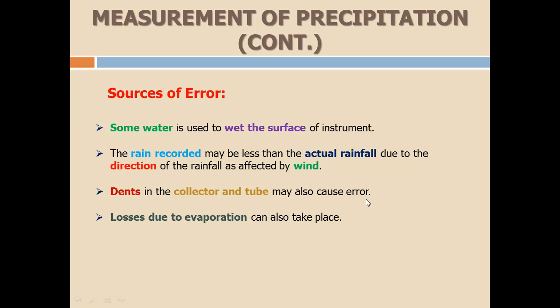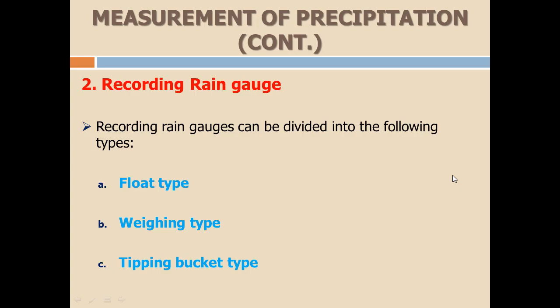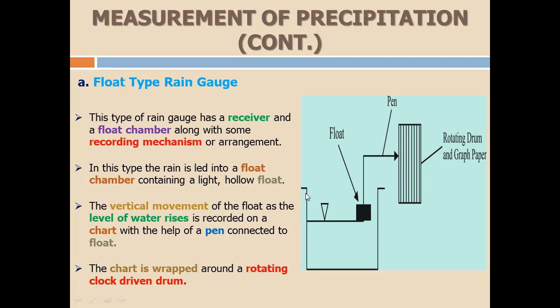Recording rain gauges can be divided into three types: number one, float type rain gauges; number two, weighing type rain gauges; and number three, tipping bucket type rain gauges.